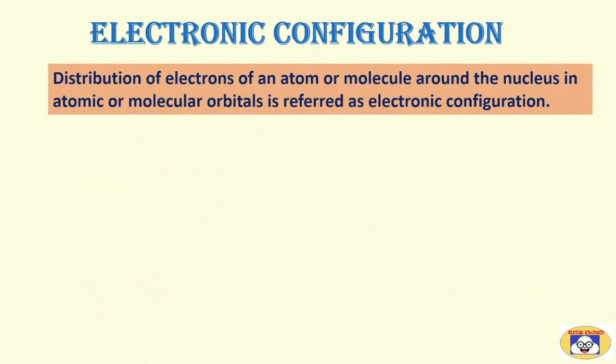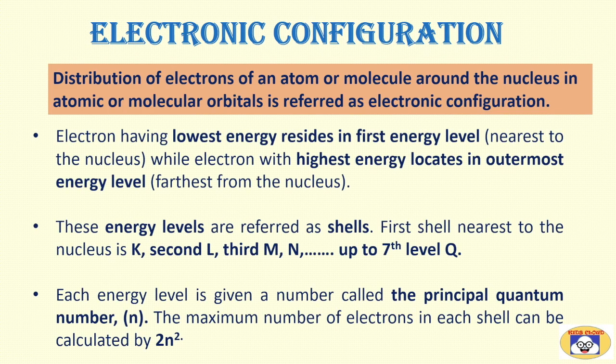Now let's learn about electronic configuration. Distribution of electrons of an atom or molecule around the nucleus in atomic or molecular orbitals is referred as electronic configuration. Here are some facts which will help us to understand electronic configuration in detail. Electron having lowest energy resides in first energy level, which is nearest to the nucleus, while electron with highest energy locates in outermost energy level, which is farthest from the nucleus. These energy levels are referred as shells.